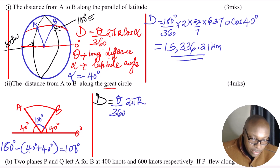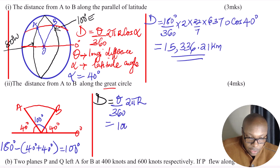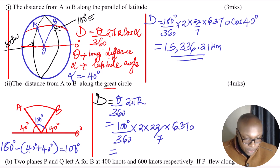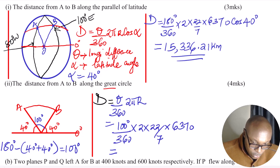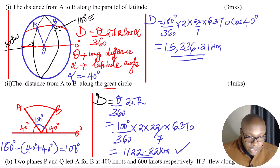Now we have the angle at the center, so we can get the arc length A to B. The formula for the distance along the great circle is: distance equals theta over 360 multiplied by 2 pi r. So: 100 over 360 times 2 times 22/7 times 6370. Working this out gives 11,122.22 kilometers. That is the distance A to B along the great circle.